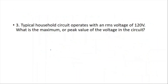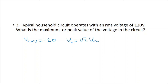Let's solve a final example. A typical household circuit operates with an RMS voltage of 120 volts — the voltage in your home is V_RMS. To find the maximum peak value: V₀ = √2 × V_RMS = √2 × 120 ≈ 170 volts. So the peak value is about 170 volts, while the RMS value used in households is 120 volts.